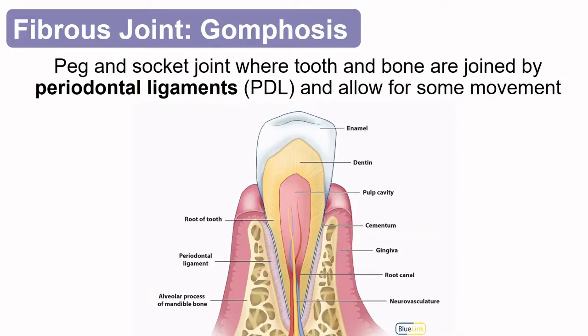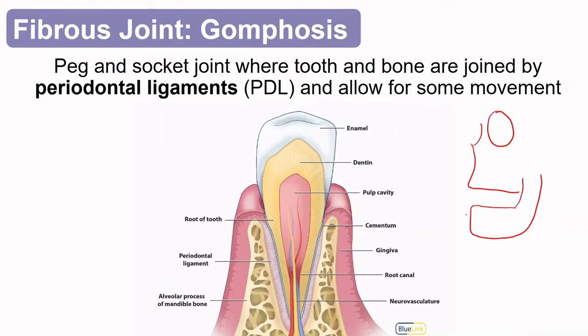Another fibrous joint is a gomphosis, and this joint is specific to teeth. Teeth have similar mineralization to bones, but the structure is different. Teeth form these joints with the maxilla and the mandible — the mandible is the lower jaw, and the upper jaw is the maxilla. The joint is formed between tooth and bone, and it's held down by periodontal ligaments. Some movement is maintained; it's not as closely bound as the suture.